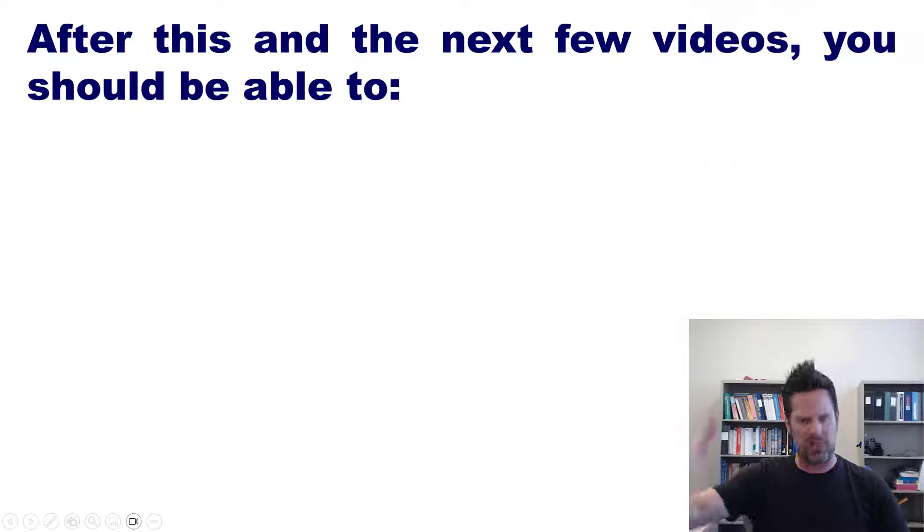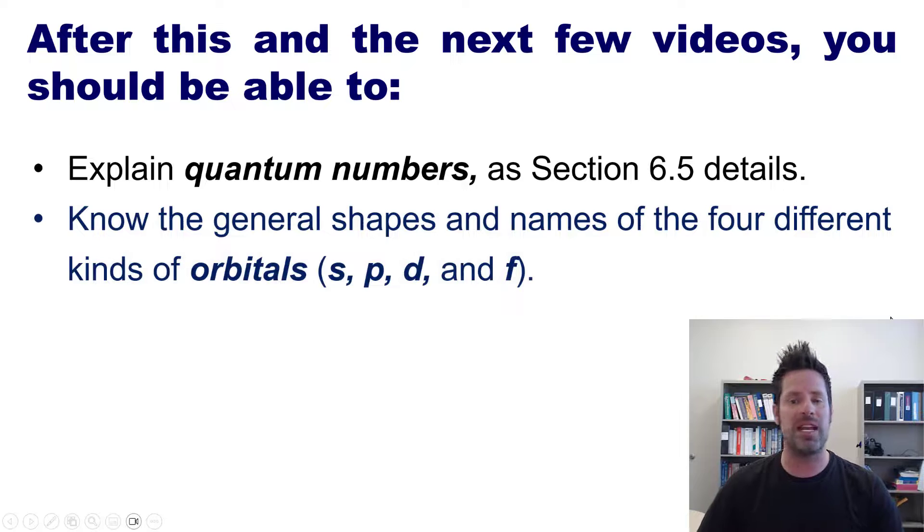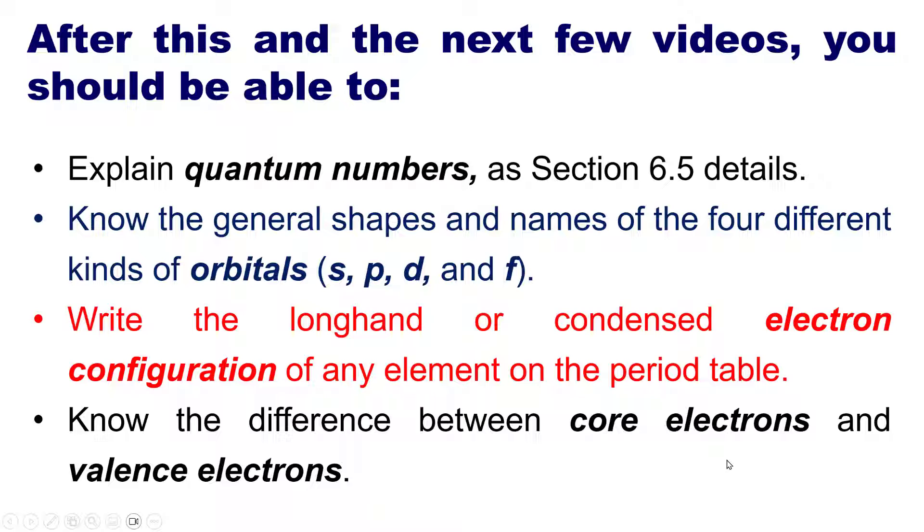After this and a few more videos that follow, you should gain the following skills: explain quantum numbers as detailed in section 6.5 of our text, know the general shapes and names of the four different kinds of orbitals S, P, D, and F, write the longhand or condensed electron configuration of any element on the periodic table, and know the differences between core electrons and valence electrons.